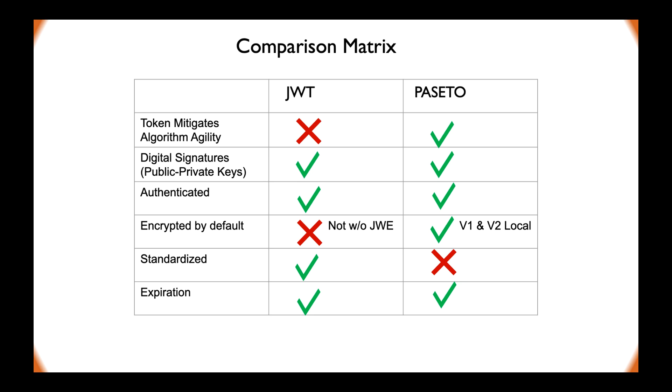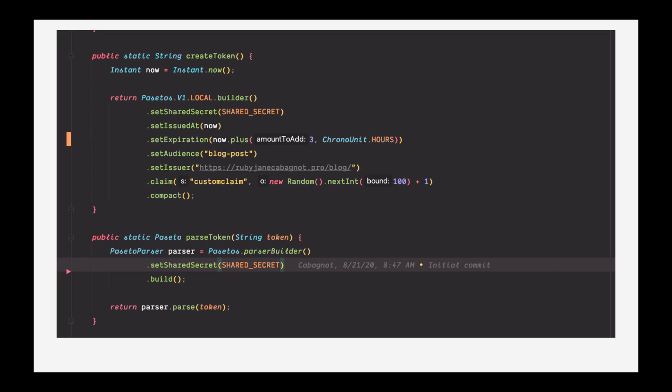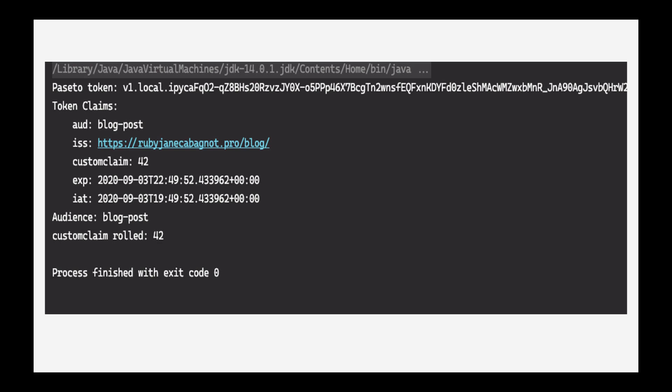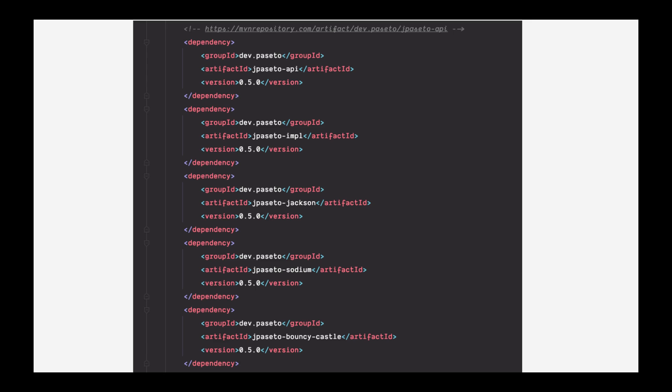Here is the comparison matrix. One drawback for Passera compared to JWT is that Passera is still currently in IETF RFC draft status. This is a screenshot of the Passera builder in Java and the Passera parser used to parse the Passera token. And this is what you get when console logging the token and console logging the claims.